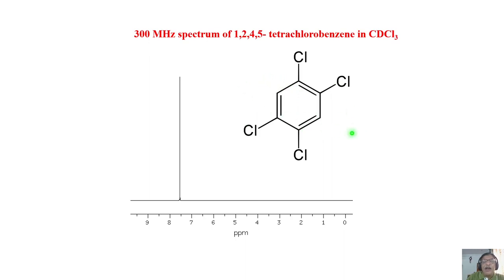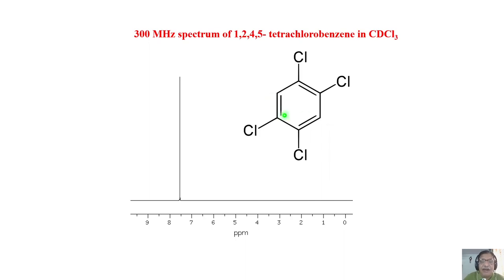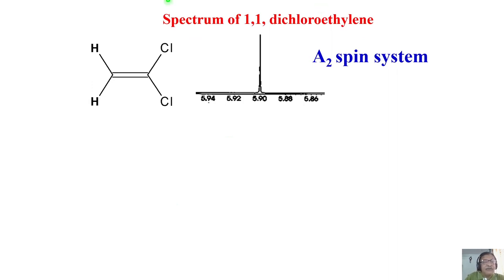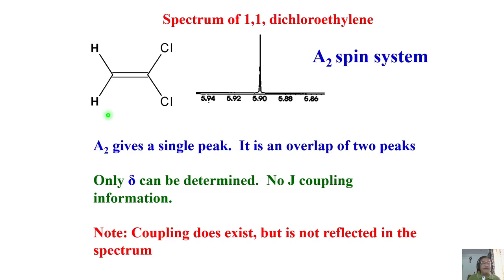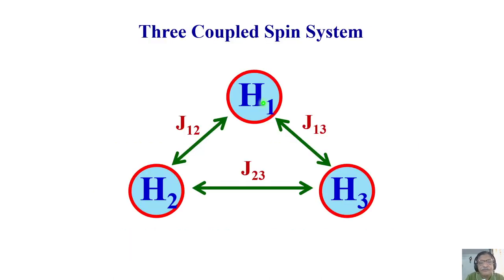There is a meta J coupling of approximately 0.5–1 Hz present in 1,2,4,5-tetrachlorobenzene, yet it is invisible in the spectrum. As shown earlier, all three symmetric states are destabilized by J/4 and the antisymmetric state is stabilized by −3J/4, yet the two allowed transitions still overlap giving a single peak. The only information you can derive from an A2 spin system is the chemical shift — no J coupling information is obtainable.